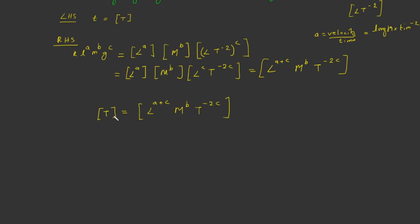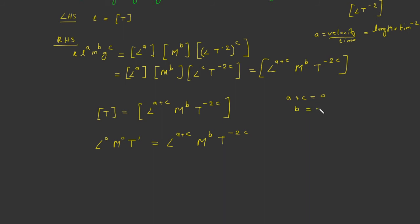Since the dimensions on both sides must be identical: on the left hand side, the power of L is 0, the power of M is 0, and the power of T is 1. On the right hand side, the power of L is (a plus c), the power of M is b, and the power of T is minus 2c. Equating these gives the equations: a plus c equals 0, b equals 0, and minus 2c equals 1.